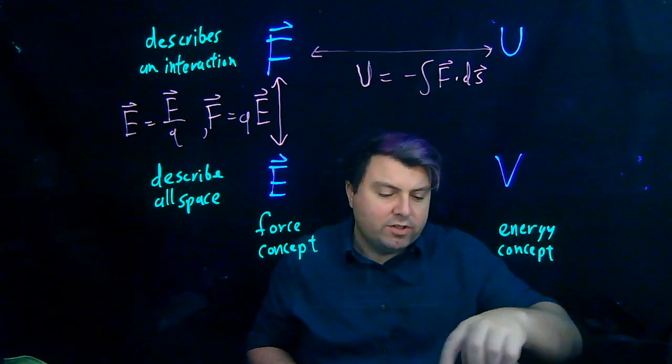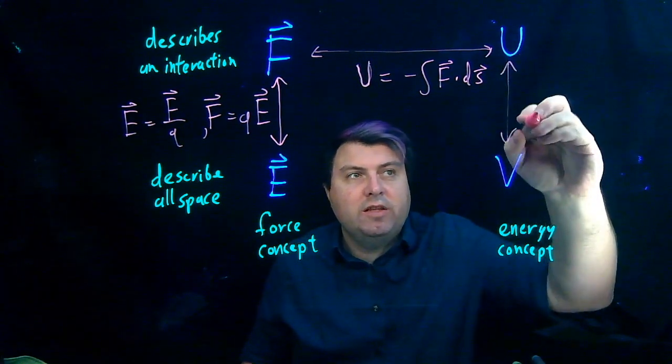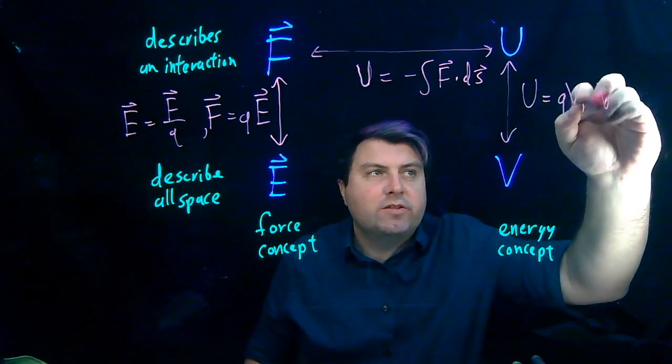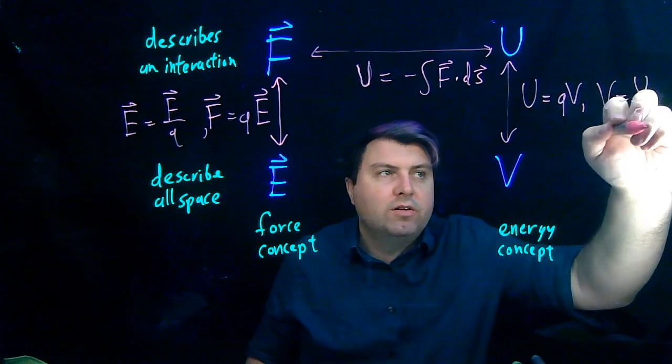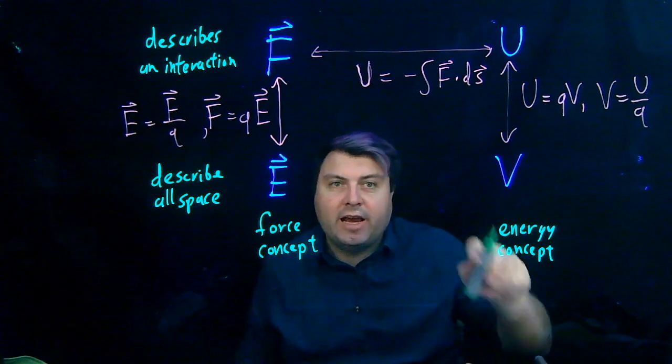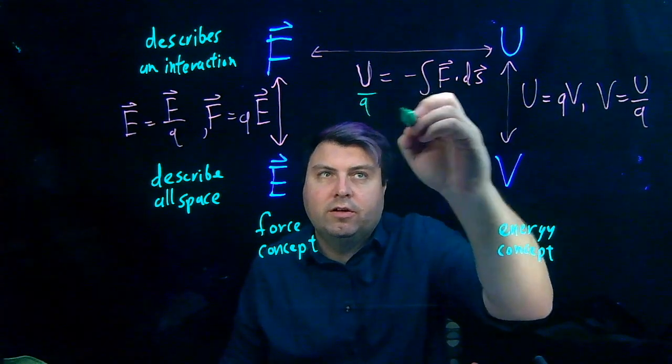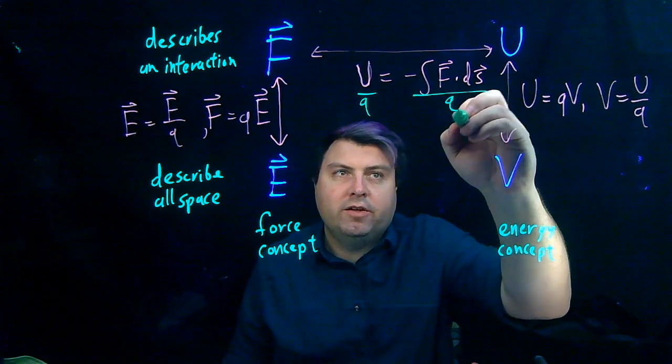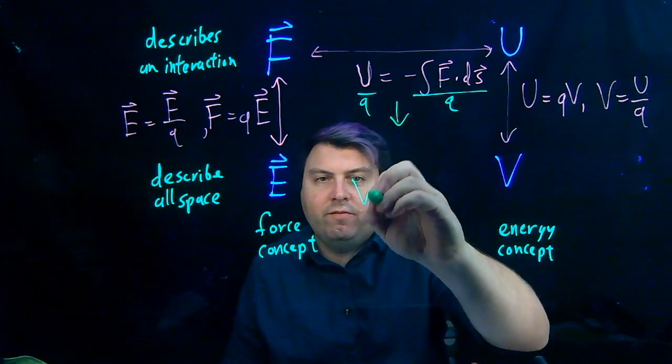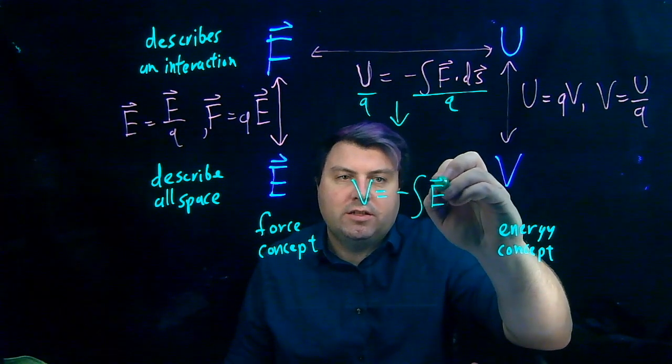Our voltage or electric potential can be defined as the relationship between these. U is equal to QV, and we can also say that V is equal to U divided by Q. If we look at this equation, we could divide U by Q and divide all this by Q, but we just use the force. If we do that, we get that V is equal to the negative integral of E dot dS.